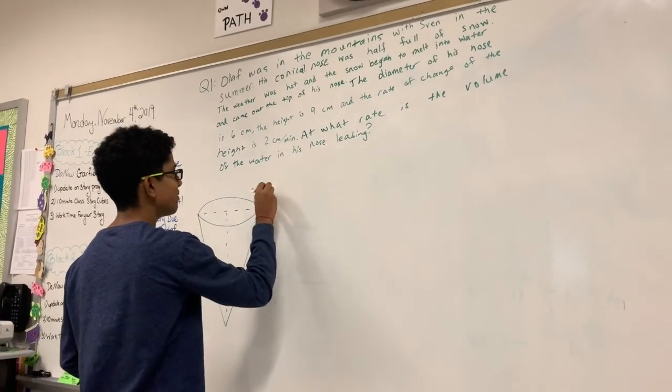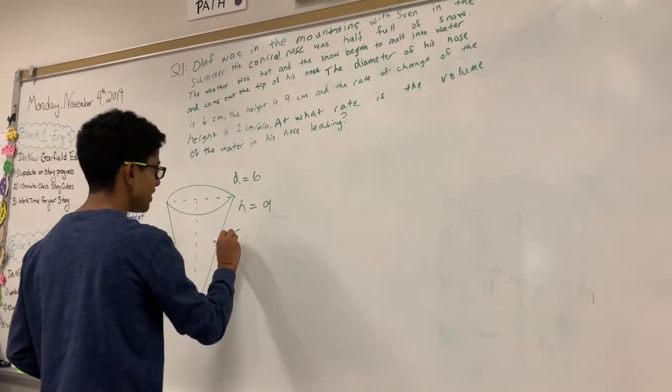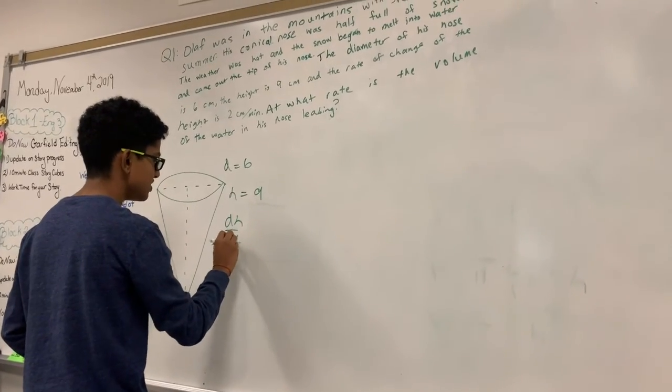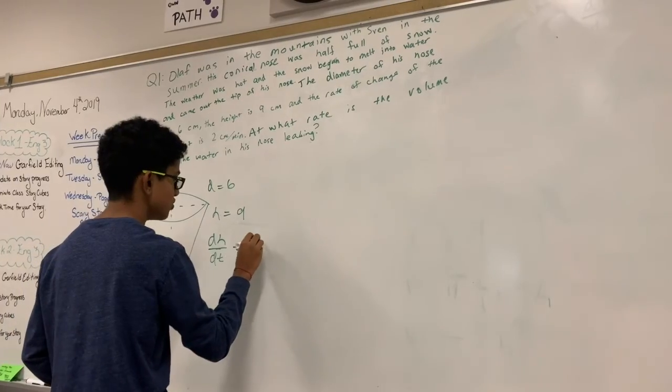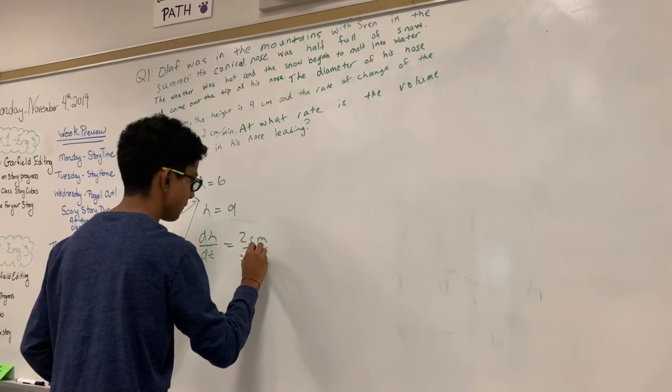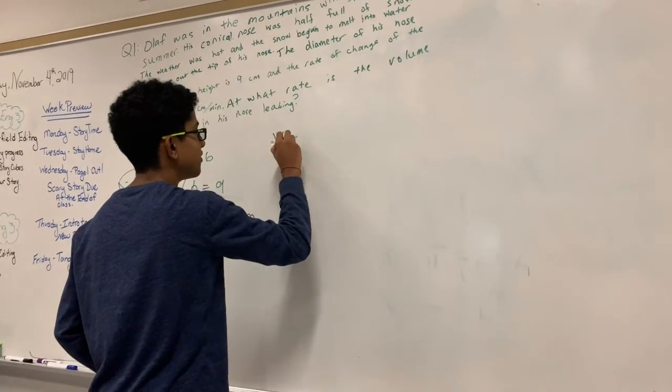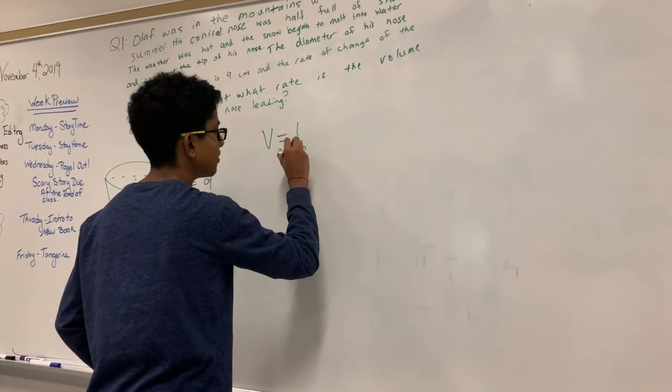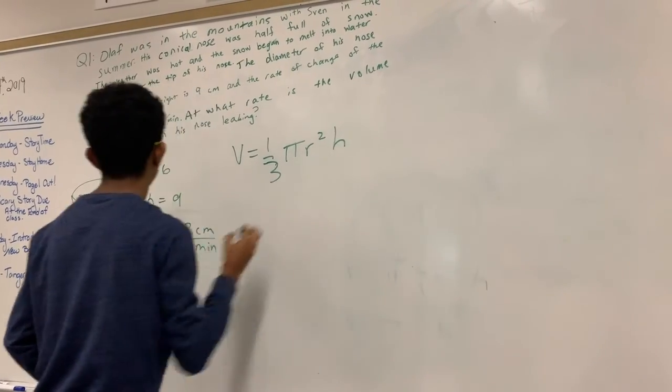So we know the diameter is 6, the height is 9, and the rate of change of the height dh over dt, because the rate of change is derivative, that is 2 centimeters per minute. And we know the conical nose, so therefore the volume would be V equals 1 over 3 pi r squared h.